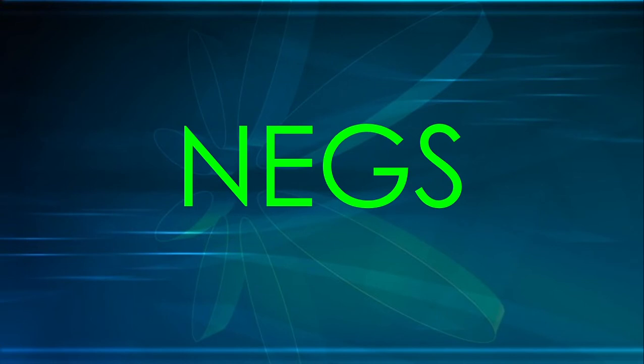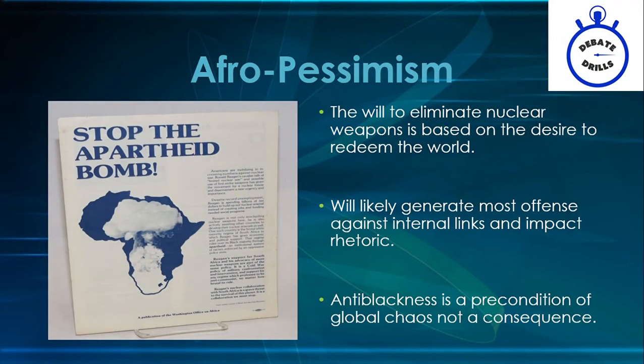Now let's transition to some cool negative arguments based in critical scholarship. First up, Afro-pessimism. The thesis of this critique is that Black death underpins everything, including the 1AC politic, and that attempting to find value in a world maintained and structured by Black death is bad. The real question people will ask is why does an attempt to get rid of nuclear weapons mean that someone is invested in anti-Blackness, especially when the legacy of nuclear arsenals has been detrimental to Black communities. This is the common argument against Afro-pessimism — that the affirmative can be good for Black people — but pessimism teams are always going to find a solid link.